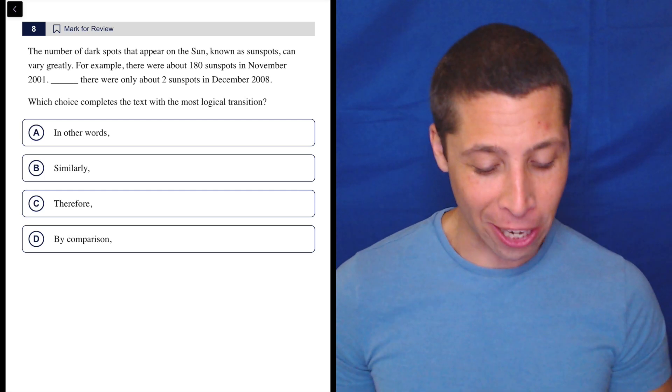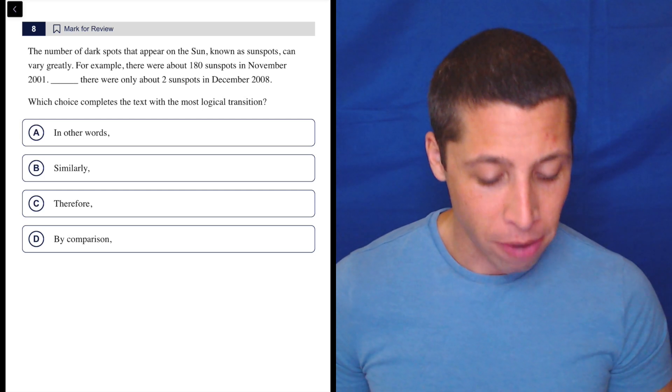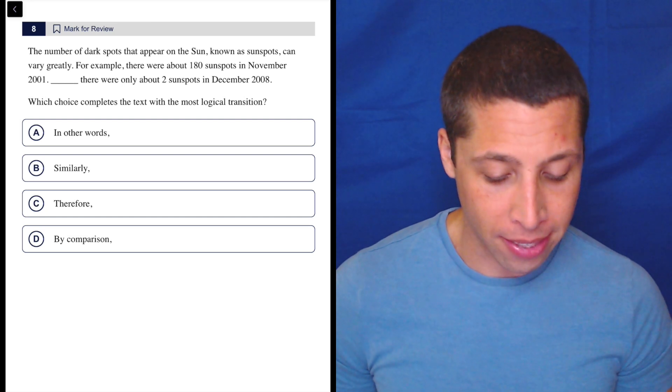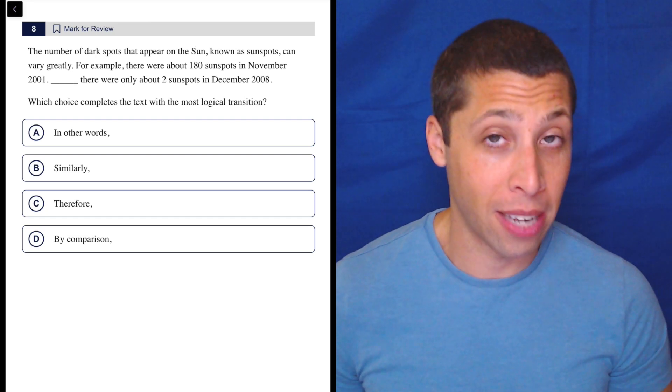This is a sneaky one. Let's take a look. The number of dark spots that appear in the sun, known as sunspots, can vary greatly. For example, there were about 180 sunspots in November 2001. There were only about two sunspots in December 2008.